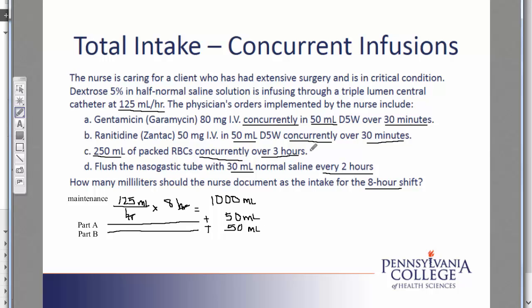Next, I'll look at Part C, where the patient is receiving red blood cells. The IV is concurrent, so again I do not need to stop the maintenance fluids. A total volume of 250 mL is going to be given to the patient. I don't have any math to do, but I do have the additional intake.